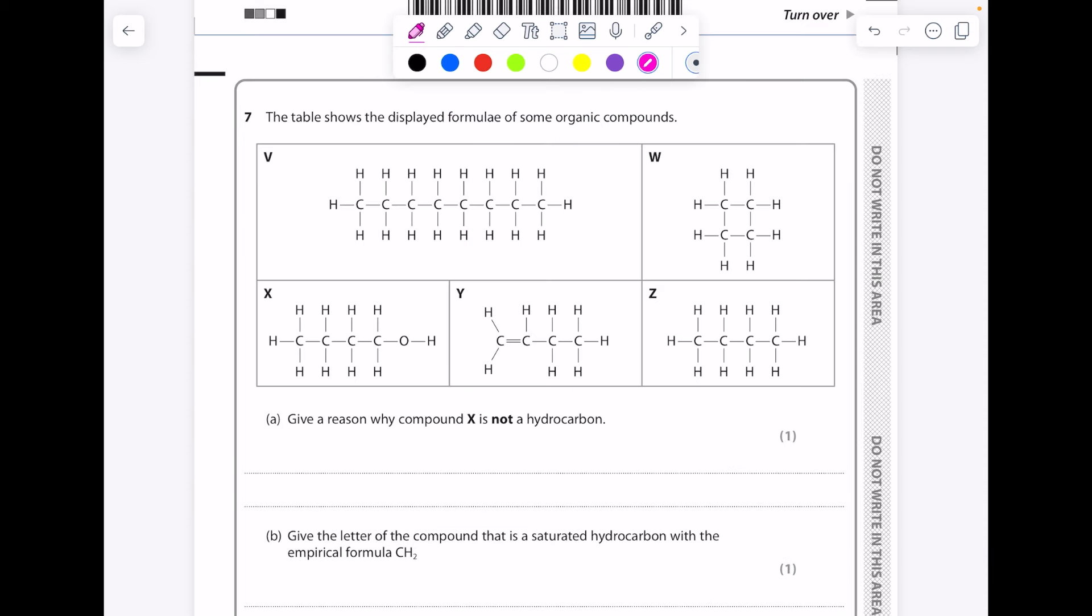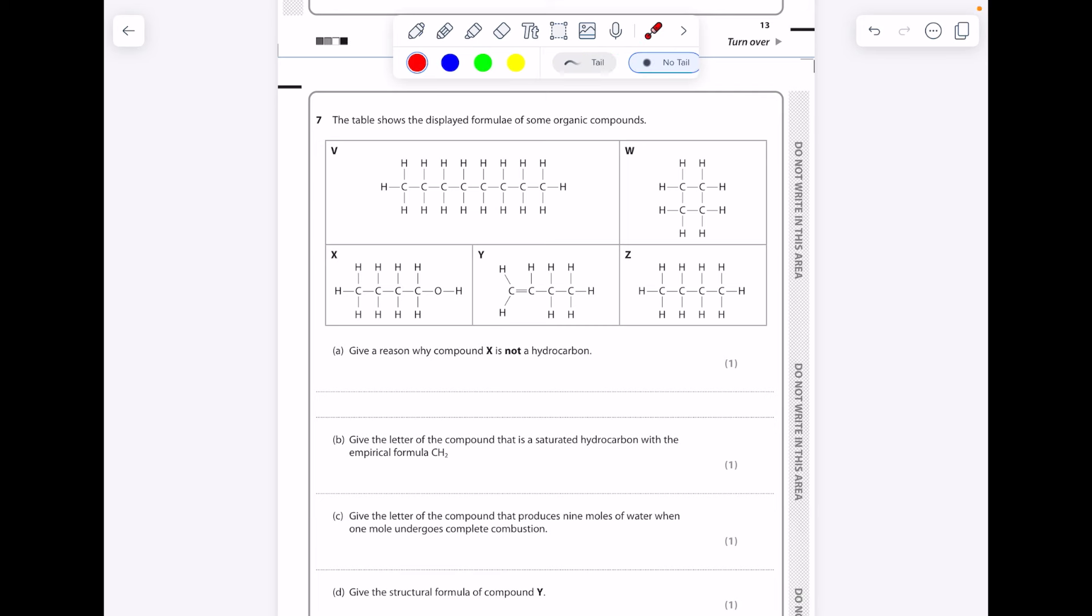The table shows the displayed formula of some organic compounds. Give a reason why compound X is not a hydrocarbon. The first thing we want to do here is list all the molecular and empirical formulae. So start with the molecular: 1, 2, 3, 4, 5, 6, 7, 8—C8H18. And then the empirical is the simplest ratio, so divide by 2 to get C4H9. Over here we have C4H8, the empirical formula is therefore CH2. I won't worry about this one because of the oxygen. This is C4H8 and therefore the empirical formula is CH2. And then over here we have C4H10, the empirical formula is C2H5. Give a reason why X is not a hydrocarbon. I already pointed out X contains oxygen and therefore can't be a hydrocarbon.